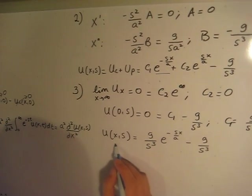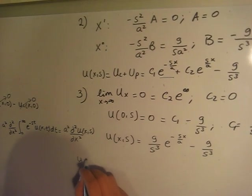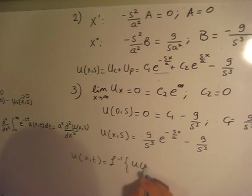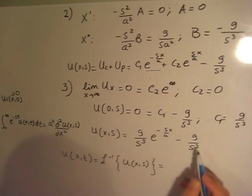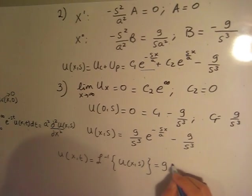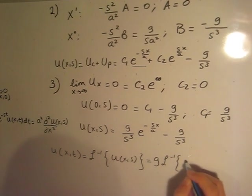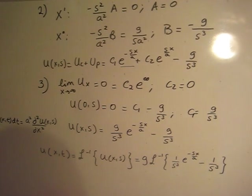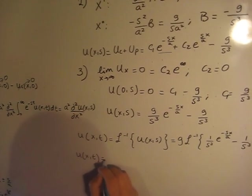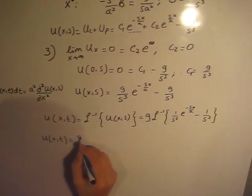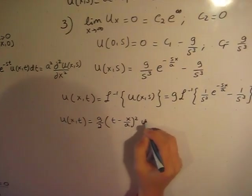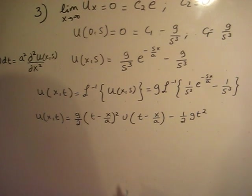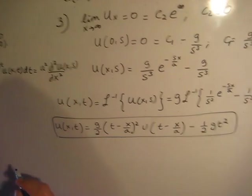We are not finished yet because our goal is to find u(x,t). To do that, we take the inverse Laplace transform of U(x,s). Treating g as a constant and pulling it outside, we apply the inverse Laplace transform to (1/s³)·e^(−sx/a) minus 1/s³. Using a table, u(x,t) equals (g/2)·(t − x/a)²·u(t − x/a) minus (1/2)·g·t². This is our solution for the partial differential equation.